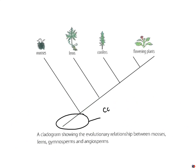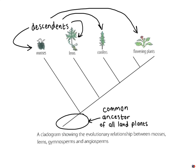This next slide shows you a phylogenetic tree from your textbook. You can see four major groups represented: mosses on the top left, ferns, gymnosperms or conifers as they're labelled, and flowering plants known as angiosperms. These are shown as the tips of the tree, and they can be viewed as the descendants of a common ancestor shown at the root of the tree, which has been circled.